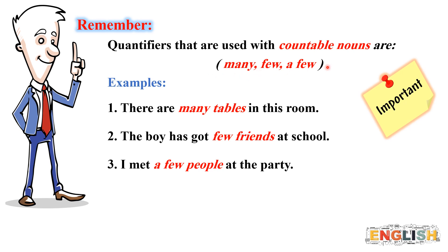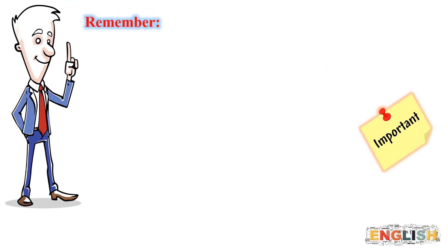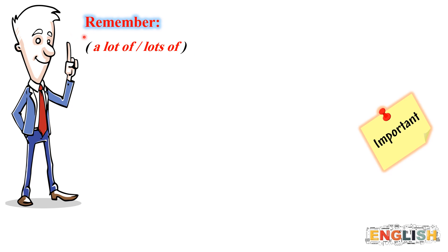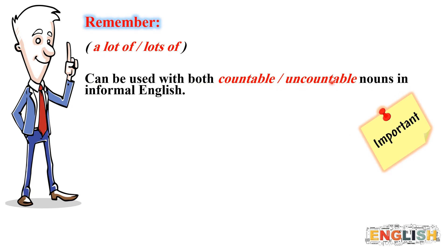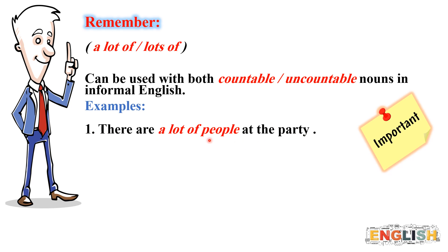In this slide, dear students, we have examples on countable and uncountable nouns. Which of these words are considered countable nouns, and which of them are considered uncountable? Have some time to work it out. Let's check your answers — countable nouns first: books, places, people, apples. These words are considered countable nouns.